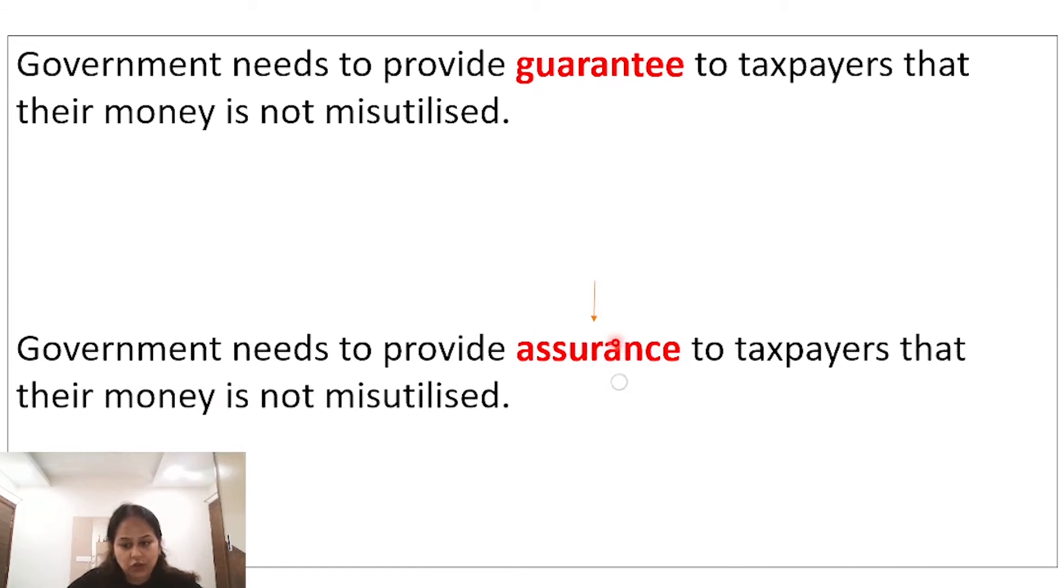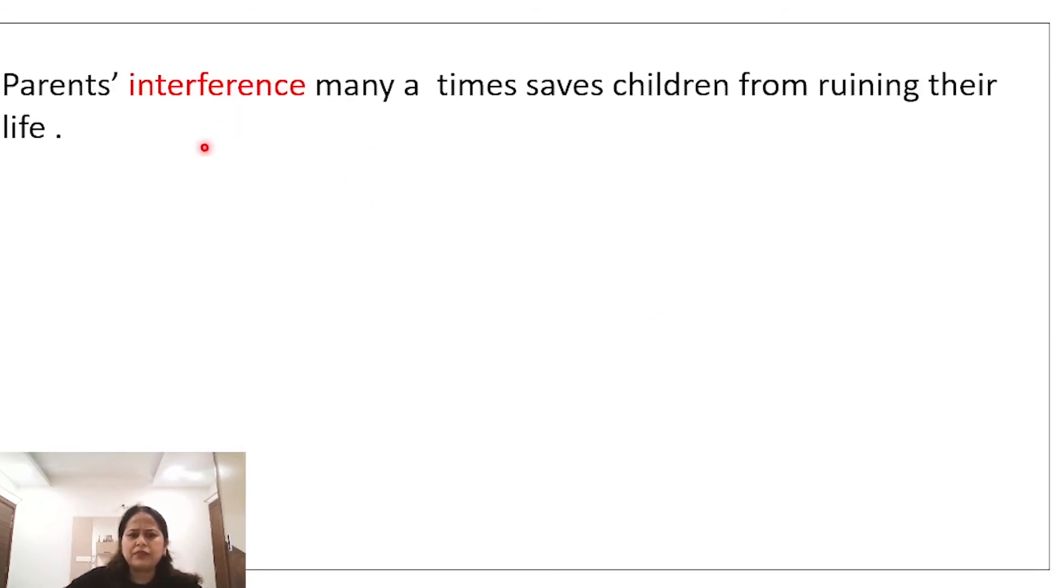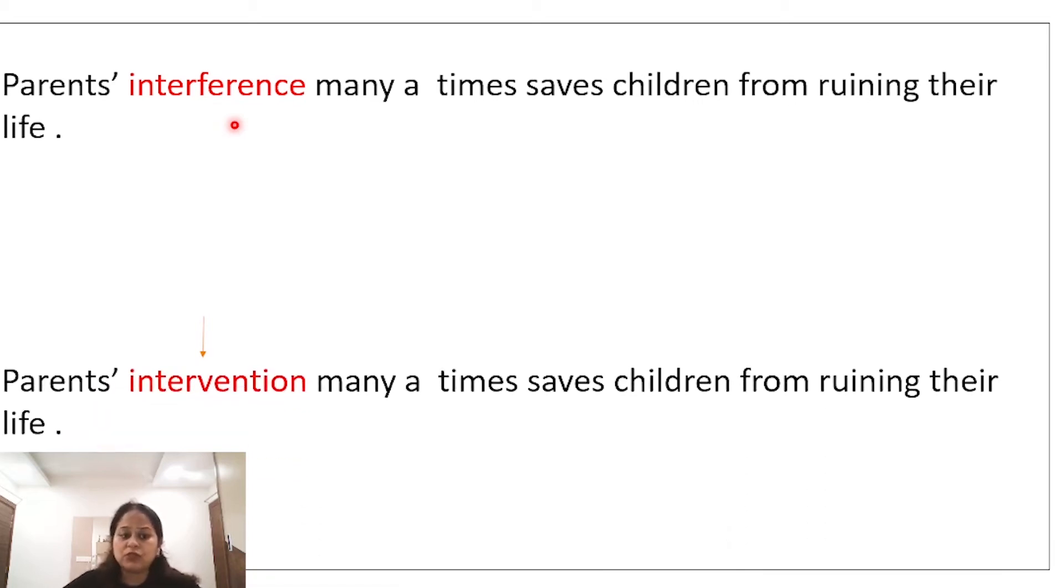Interference. Interference ki jagah hum synonym kya use kar sakte? Hum use kar sakte hain intervention. Parents ka jo interference hota hai, kabhi kabhi bachon ki life ko bacha sakta hai. Parents' intervention many a times saves children from ruining their life.